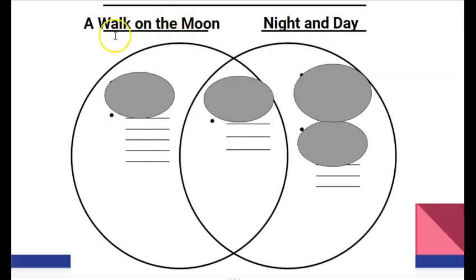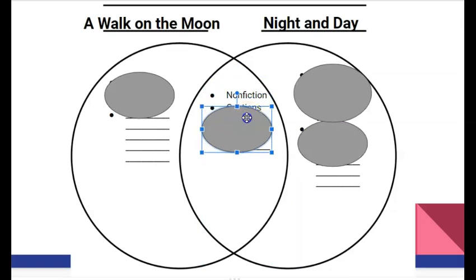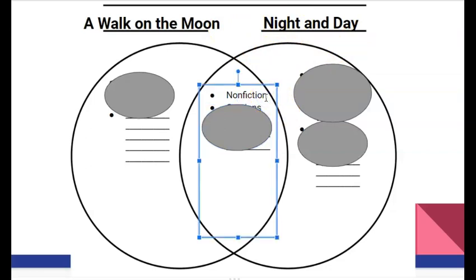Now that we went back and remembered our story A Walk on the Moon, and we've been looking at Night and Day all week, we should have a pretty good understanding of both these texts to compare and contrast. What I always think of first when comparing and contrasting is the type of story it is. What type of story is Night and Day? Is it a fictional story, one we made up? Or is it an informational text, something that's teaching us? It's an informational text. What about A Walk on the Moon? Was that teaching us something about real life? Absolutely. So Miss Kelly put in the middle that these were non-fiction texts — true stories about how we actually walked on the moon and what really happens to make night and day. They're both non-fiction, or informative stories, because they teach us about things.